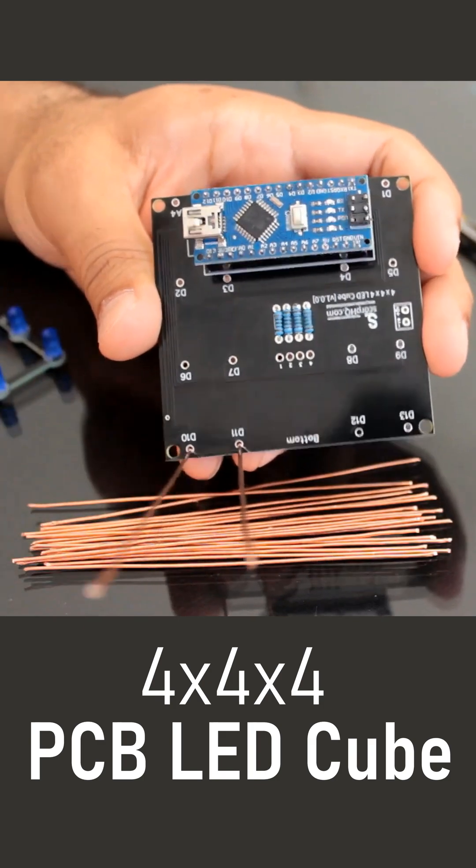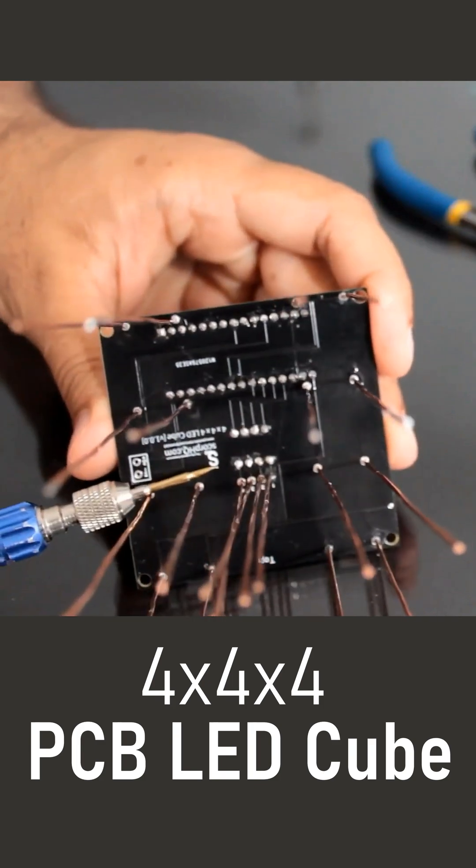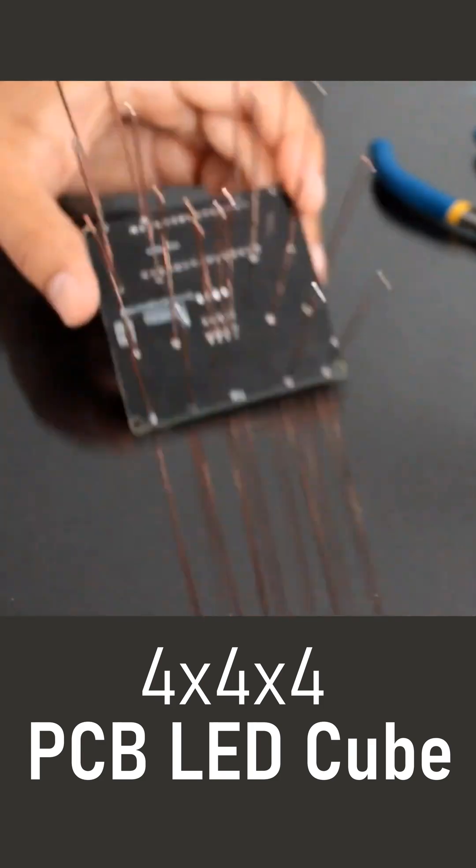After that, I one by one soldered all the copper wires to the base plate. While soldering the wires, please make sure you solder them to the top side of the board.